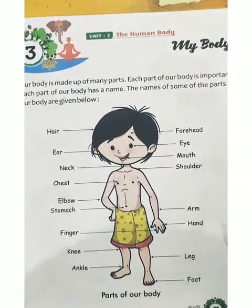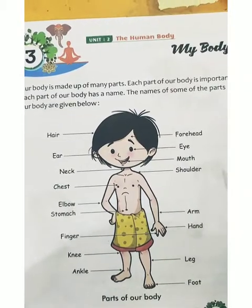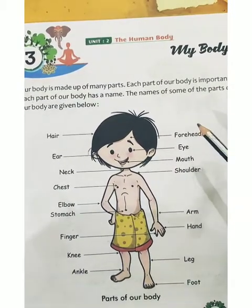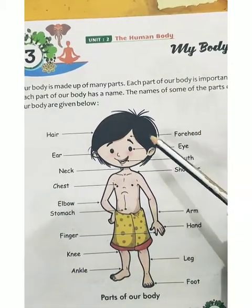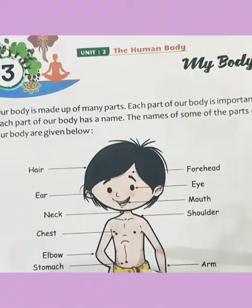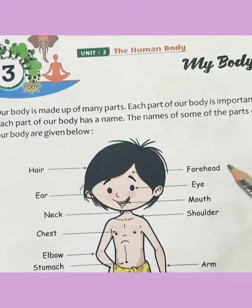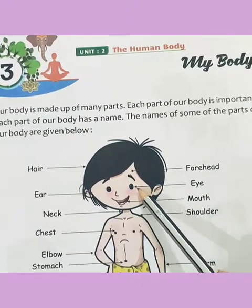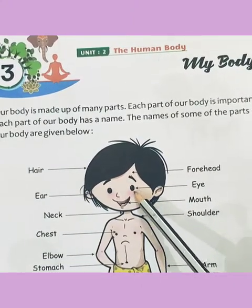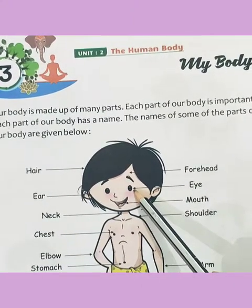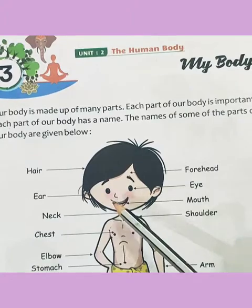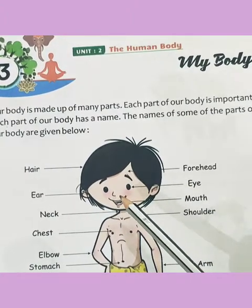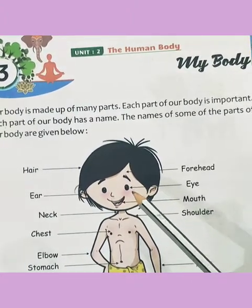Children, as you know, our body is made up of many parts and each part of our body is important. For example, eyes — we can use eyes to see. For example, nose — we can use nose to smell.